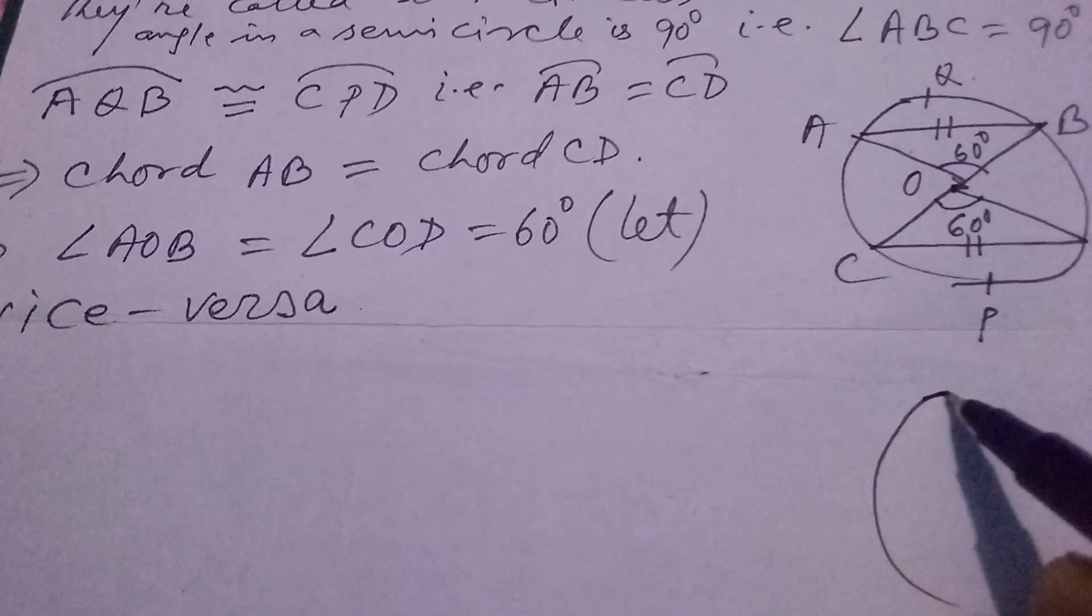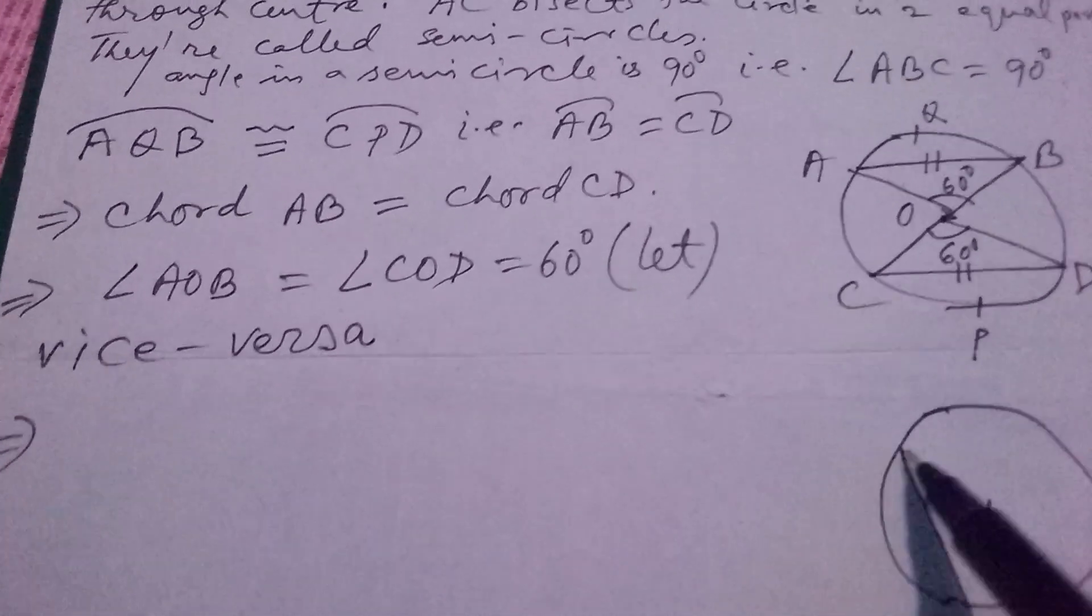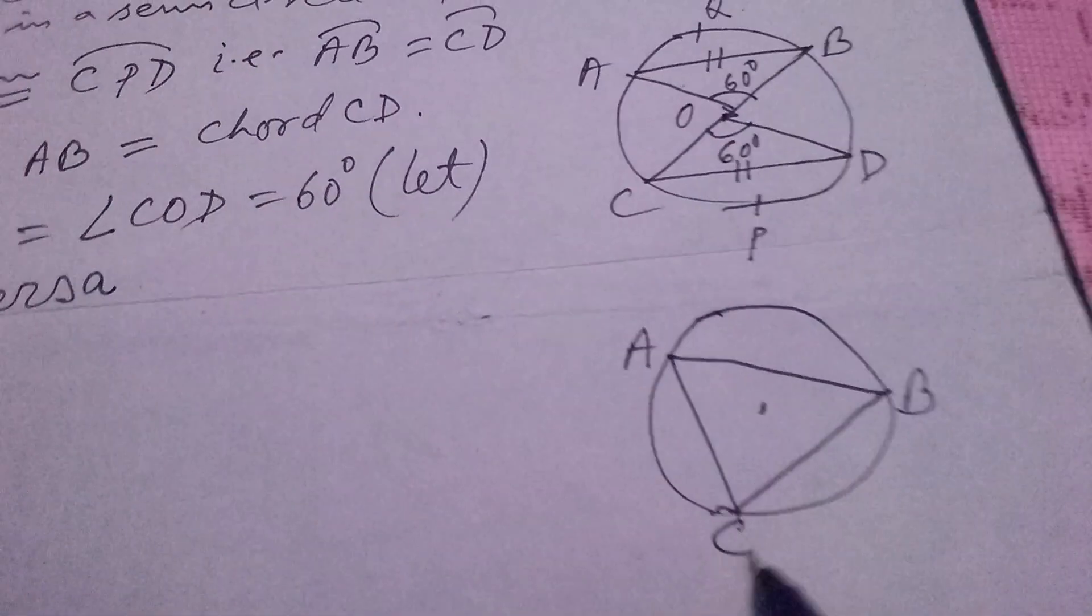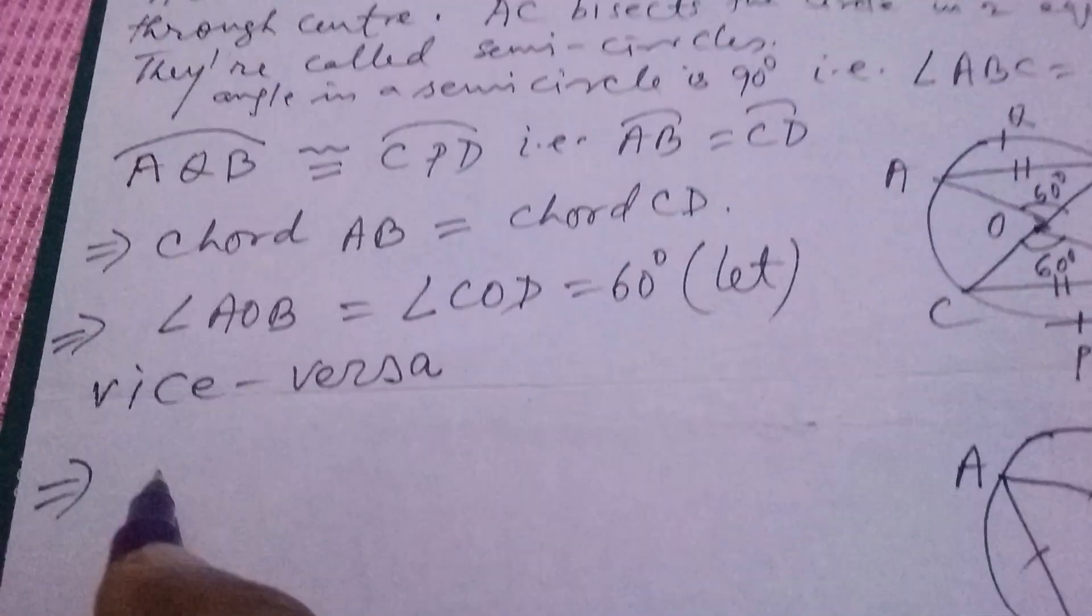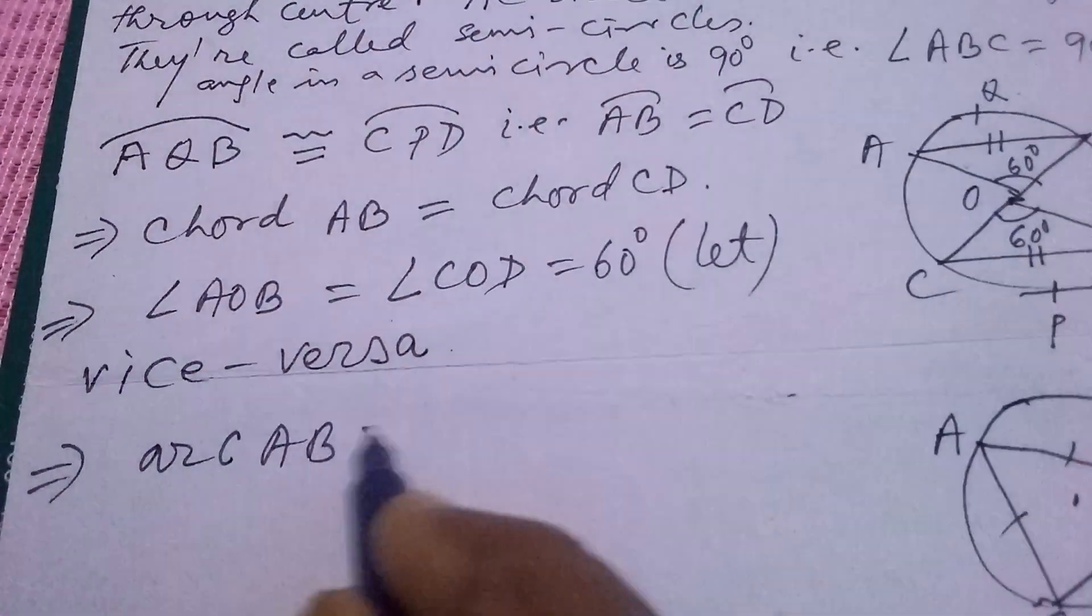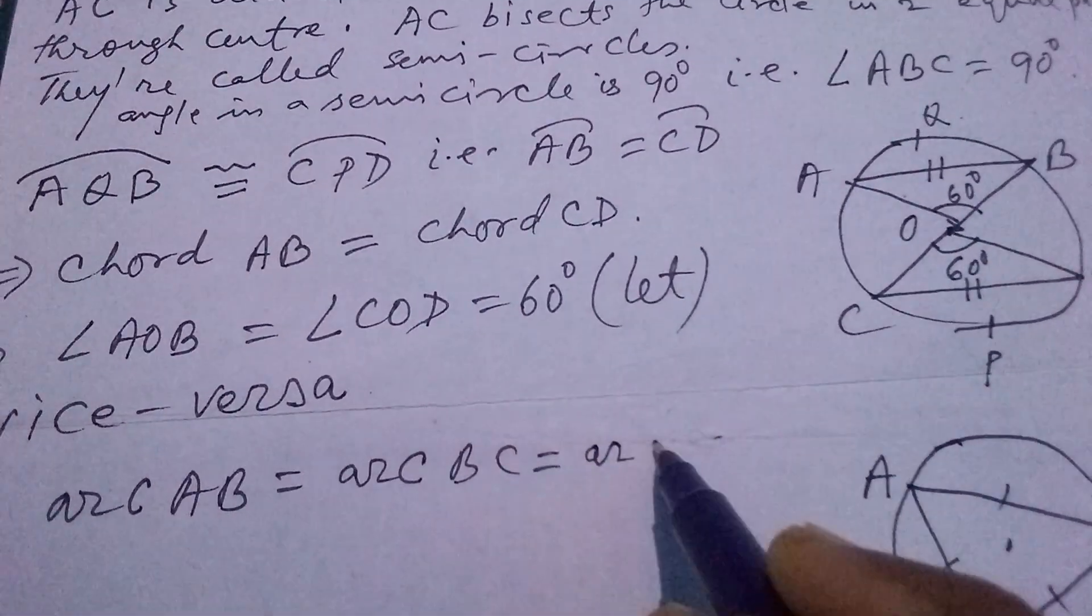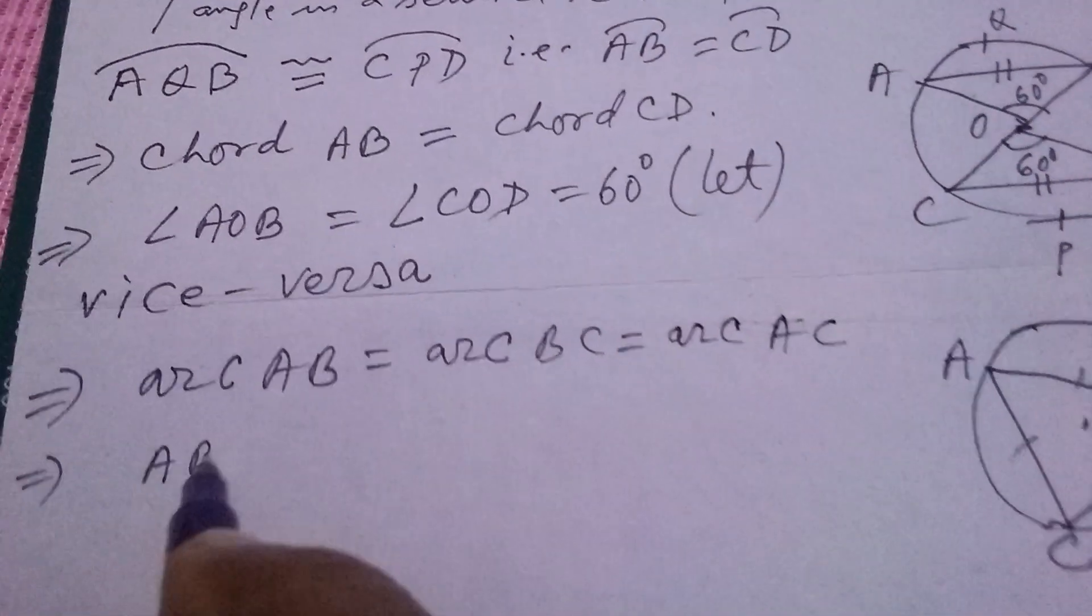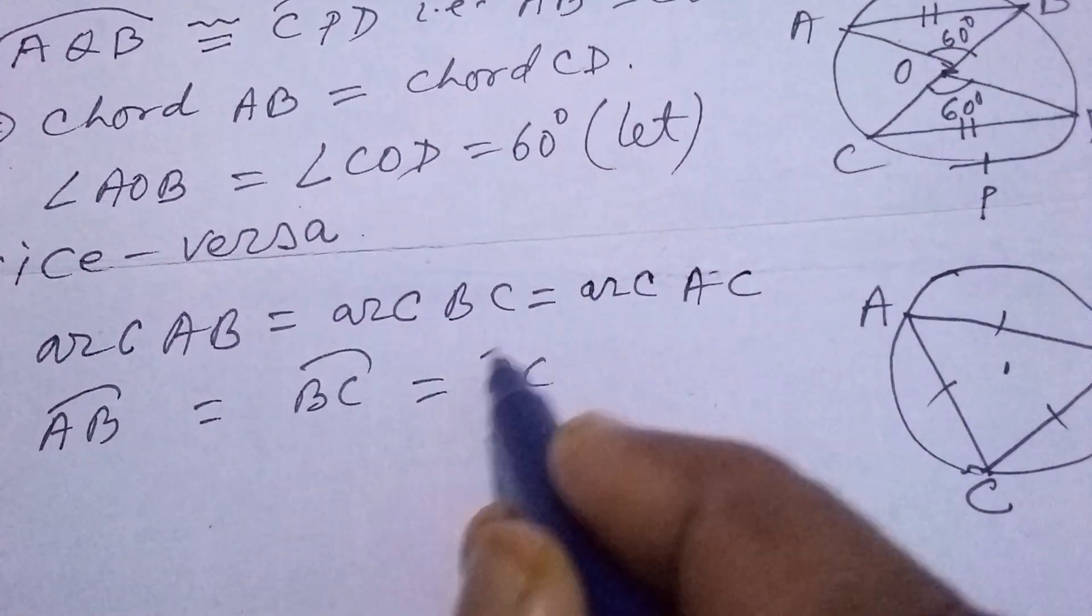Now suppose one another figure I am taking, in which three chords I have, A, B, B, C and A, C. Here, arc AB equals to arc BC equals to arc AC. What does this mean? This can be written as, AB arc equals to arc BC, and that is equal to arc AC.